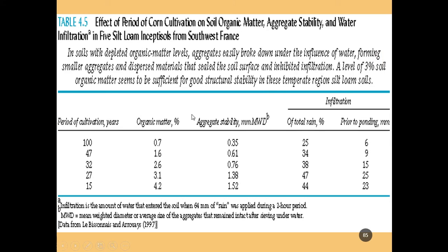This chart talks about the period of cultivation. The longer a field is cultivated — 15 years versus 100 years — we see a decrease in organic matter from 4.2% to 0.7%, an associated decrease in aggregate stability, a decrease in water infiltration, and a reduction in the amount of water that falls before ponding on the soil surface. Mismanagement of agricultural lands decreases organic matter and aggregate strength, so rain droplets can destroy surface aggregates, resulting in higher rates of ponding, less infiltration, more runoff, and drier soil that requires more irrigation.